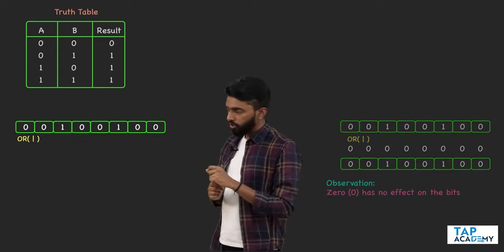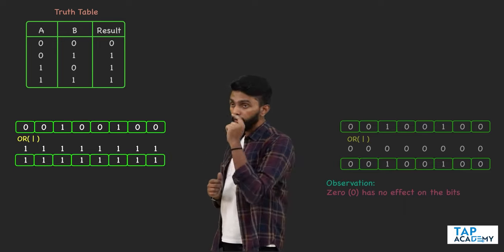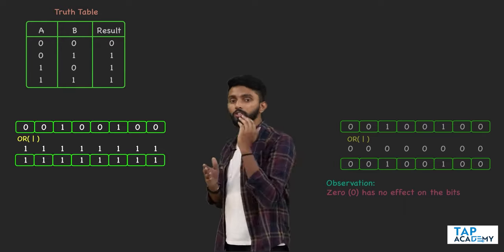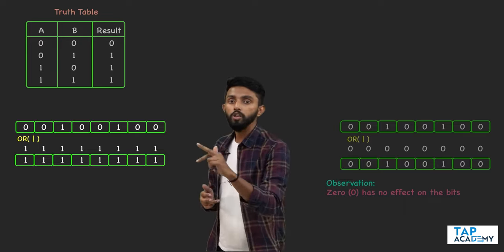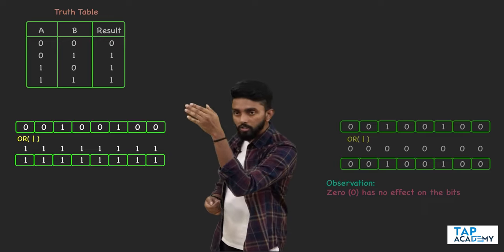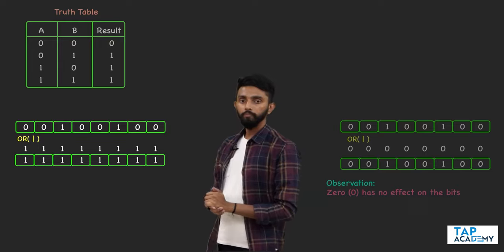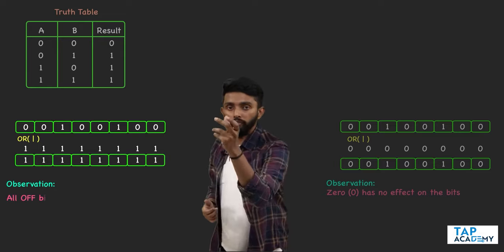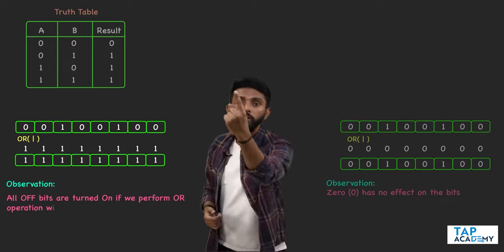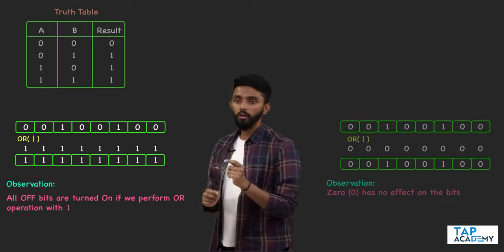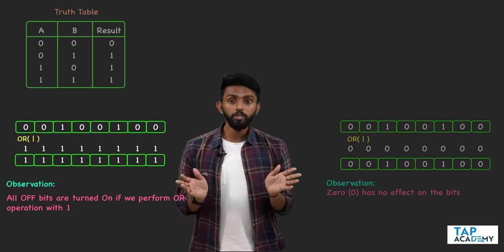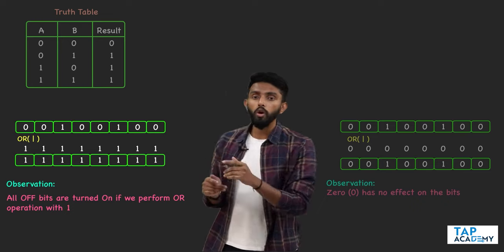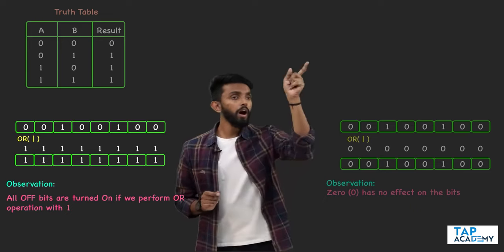Now on the other side, I'm going to perform OR operation with all ones. One certainly has an effect — wherever there is a zero, doing OR with one makes it one. Zero OR one is one, and one OR one is also one. So all bits that were off get turned on. These two observations are critical: zero has no effect, and one will switch on any bits that are off.